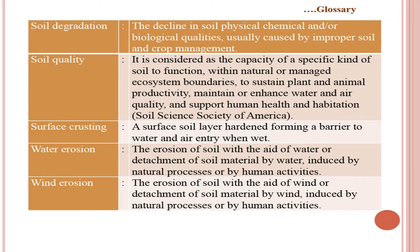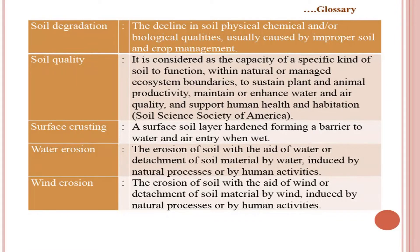Surface crusting: a surface soil layer hardened, forming a barrier to water and air entry when wet. You may have seen that after sudden rain on a ploughed field, surface crusting can develop, causing problems in seed germination. Water erosion is the detachment of soil material by water, induced by natural processes or human activities. Wind erosion means removal of soil with the help of wind.